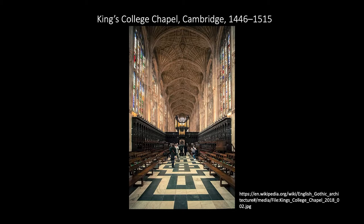Gothic architecture in particular was a very compelling style. In England especially, a highly refined version of the Gothic style — perpendicular Gothic — continued to develop right into the 16th century, while the High Renaissance was going on in Italy. King's College Chapel in Cambridge is a great example of this well-named perpendicular style, really emphasizing an exaggerated soaring height.